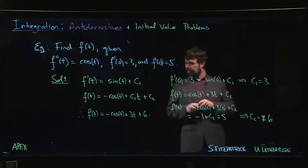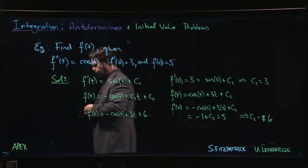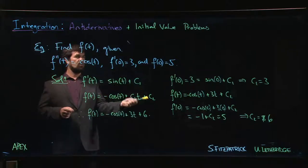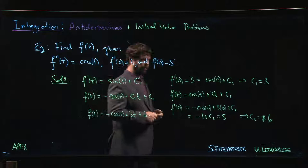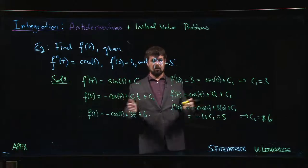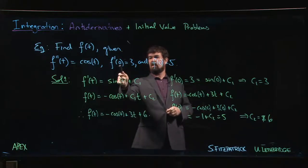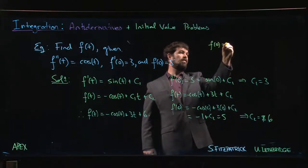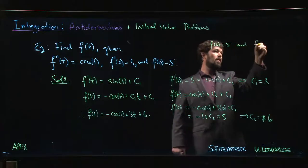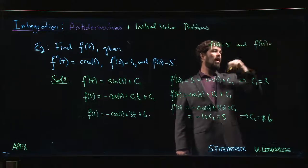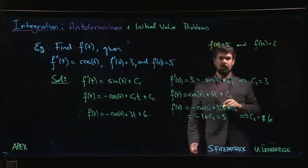Now, there's a variation on this problem that we don't look at in this course or in this book, but you might encounter if you're moving on and looking at some differential equations material. In addition to initial value problems, there's also something called a boundary value problem, where maybe you know that your function is defined on some closed interval and you have the values of the two endpoints. So instead of being given values for f prime of zero and f of zero, you might have been told, say, f of zero equals five and f of pi is equal to two, and you're given those two values.